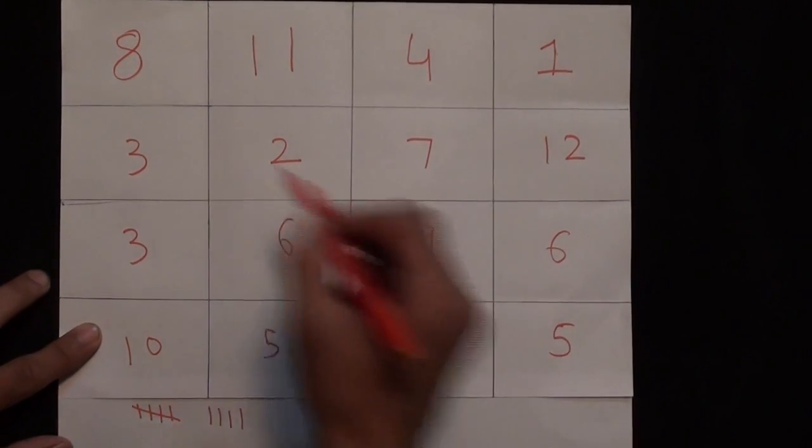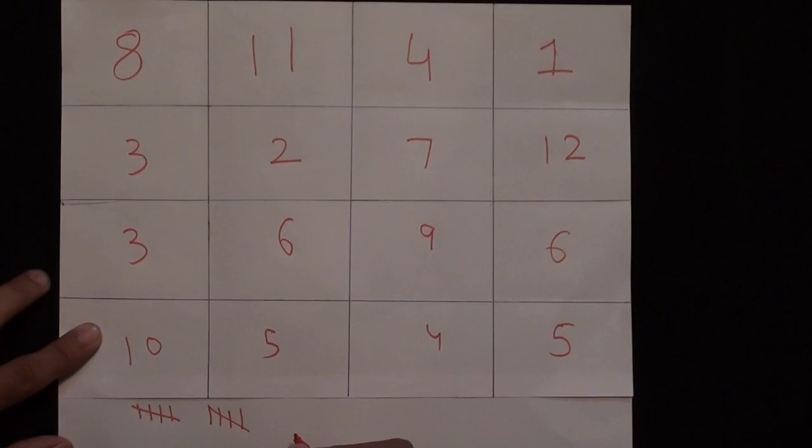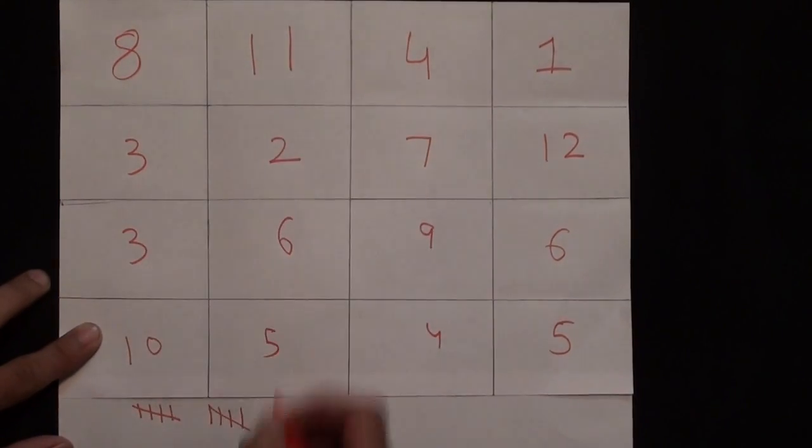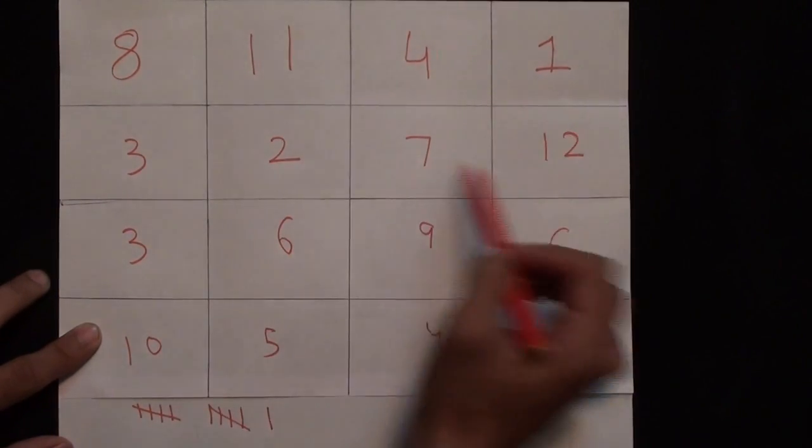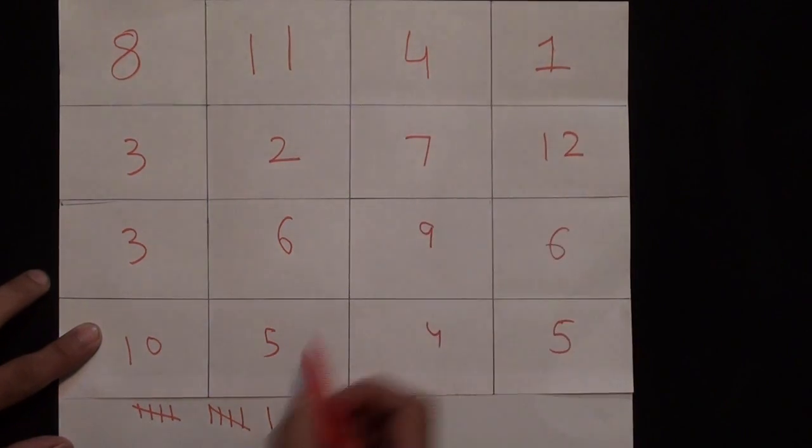We can also add the top square: 8 plus 11 plus 3 plus 2 equals 24. The second square: 4 plus 1 plus 7 plus 12 equals 24.